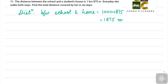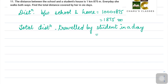Now she walks both ways, or the student walks both ways. So the distance traveled by the student in 1 day, that is 1875 plus 1875, or you can write 1875 into 2. So this gives us 3750 meters.